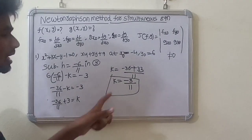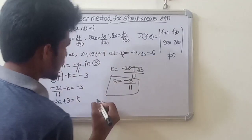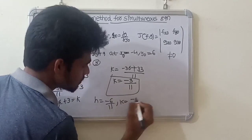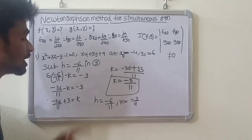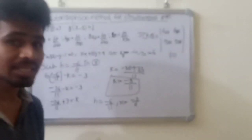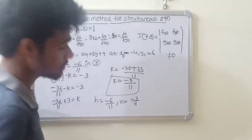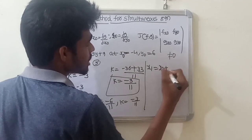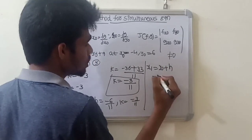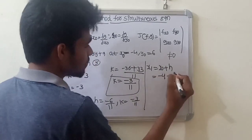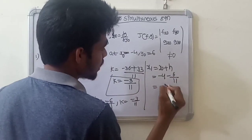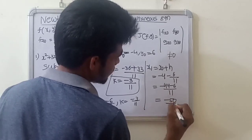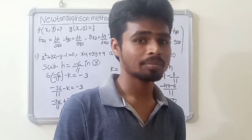So h equals minus 6 by 11 and k equals minus 3 by 11. Now finding x1 and y1: x1 equals x0 plus h. Since x0 equals minus 4, x1 equals minus 4 plus minus 6 by 11 equals minus 44 by 11 minus 6 by 11 equals minus 50 by 11. So x1 value is minus 50 by 11.